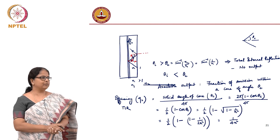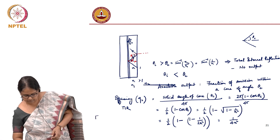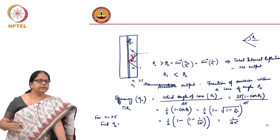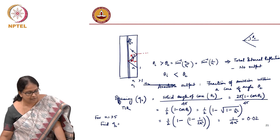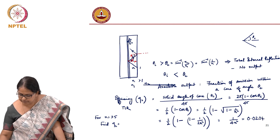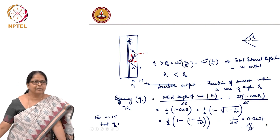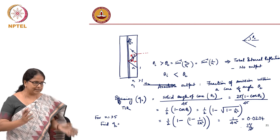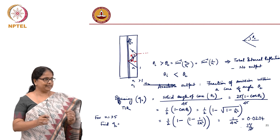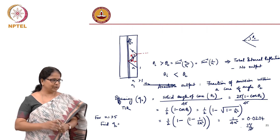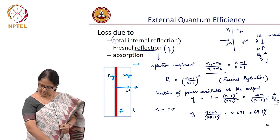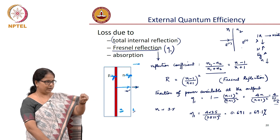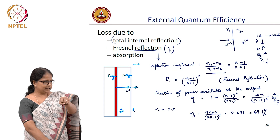For n = 3.5, eta_2 = 1/(4 × 3.5²) ≈ 0.0204, which is about 2 percent. So you emitted a lot of light — a lot of photons — but because of total internal reflection, you are getting only 2 percent out. And you don't get the entire 2 percent, because you also have to account for the 69 percent Fresnel loss. So it is 69 percent of the emitted light, then 2 percent of that, because these are independent processes.